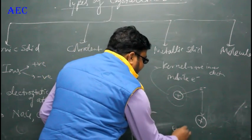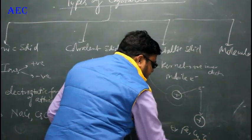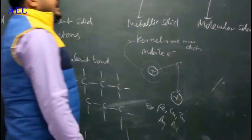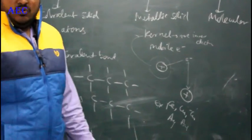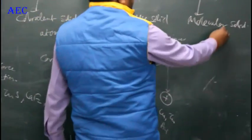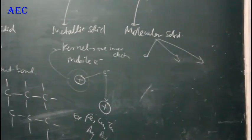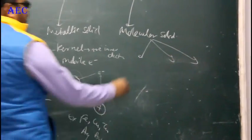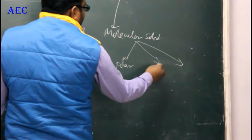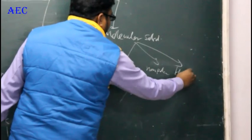Examples of metallic solids are iron, copper, zinc, silver, and gold. Now, molecular solids are divided into three parts because molecules can be of three types: polar, non-polar, and hydrogen bonded.